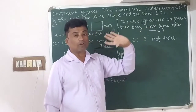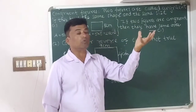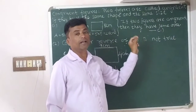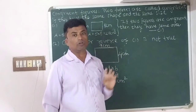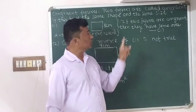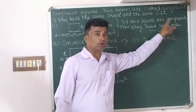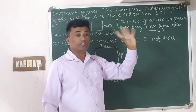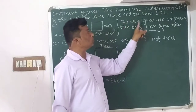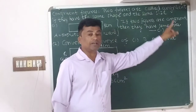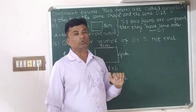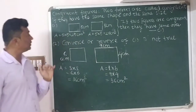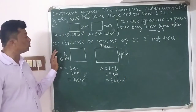The opposite statement — if two figures have the same area, then they are congruent to each other — is not true. I will explain this with example number two.